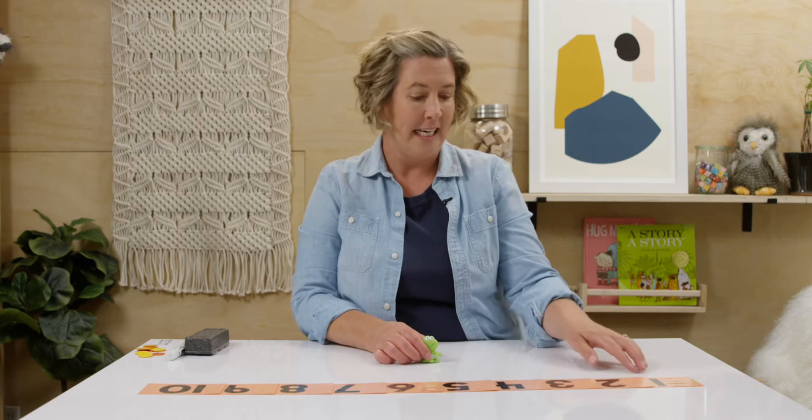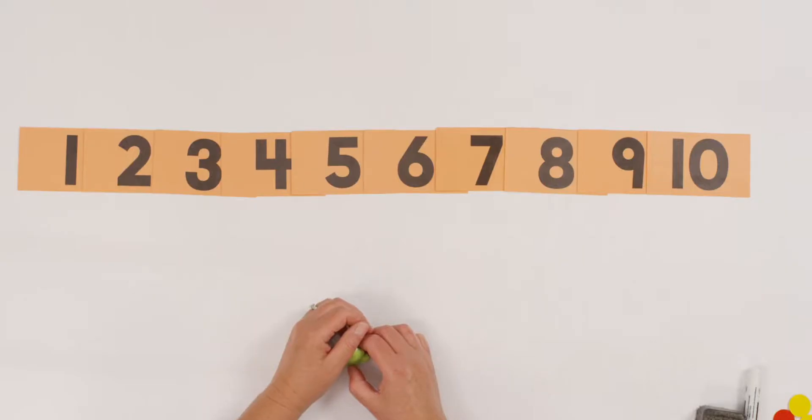So the first strategy we're going to learn about to help us with addition is using the number line. It's so simple, but it is super helpful. So I set out my number cards from 1 to 10. You can do that too right now or you can even draw it on your whiteboard. Either way, take a moment and set out a number line.